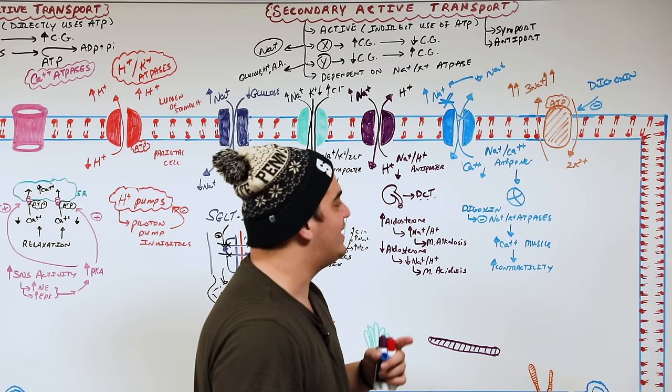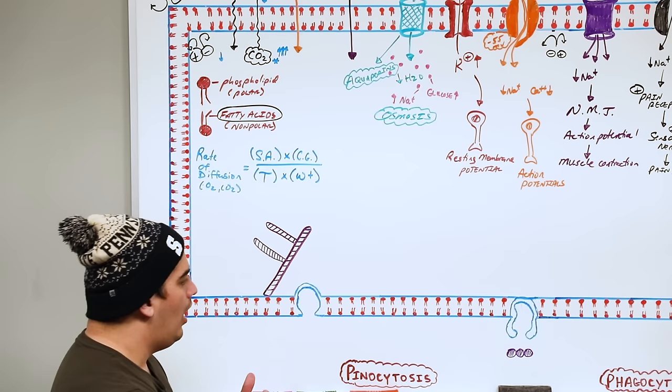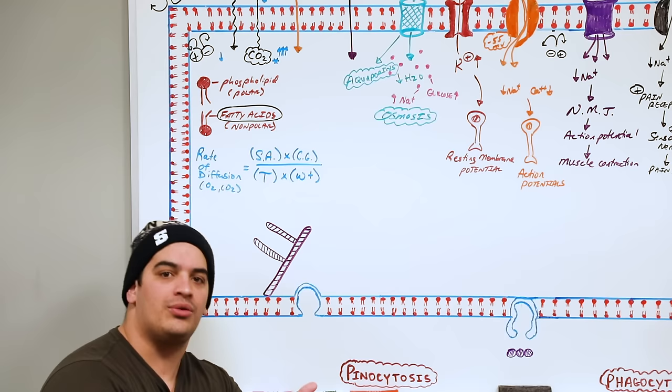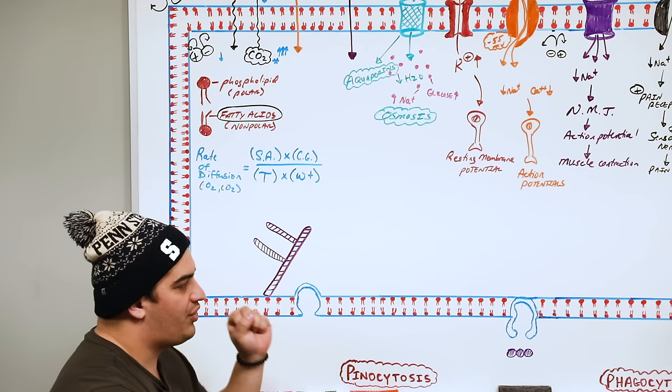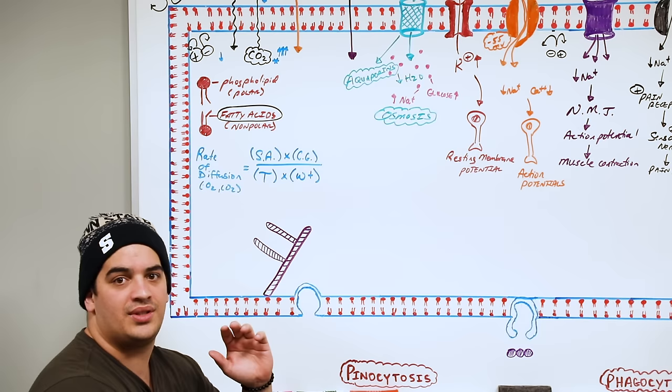Now let's discuss vesicular transport mechanisms. There are two types: endocytosis — taking something into the cell — and exocytosis — pushing something out. Endocytosis has three subtypes: pinocytosis, phagocytosis, and receptor-mediated endocytosis.